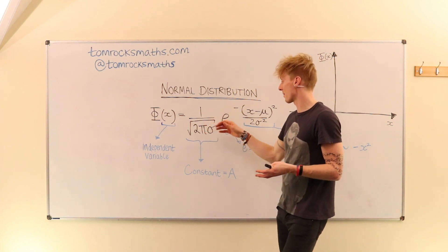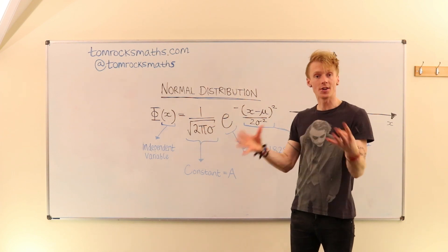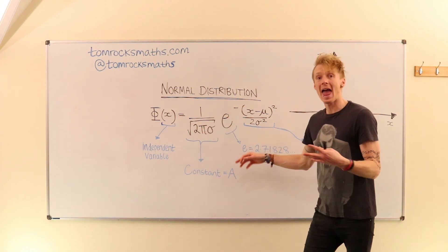We have 2, we have pi, we have some sigma which is just a number. And so this whole thing here is a constant. We're going to call it A.